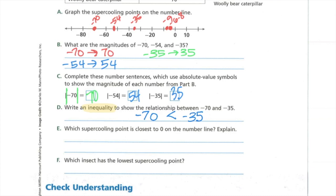Which supercooling point is closest to zero on the number line? So look at your number line. Which one's closest to zero? The pink rice borer, negative 6.8. Which insect has the lowest supercooling point? So that means which one can survive the coldest temperature? That negative 70. So that's the woolly bear caterpillar. That's the one in the picture.